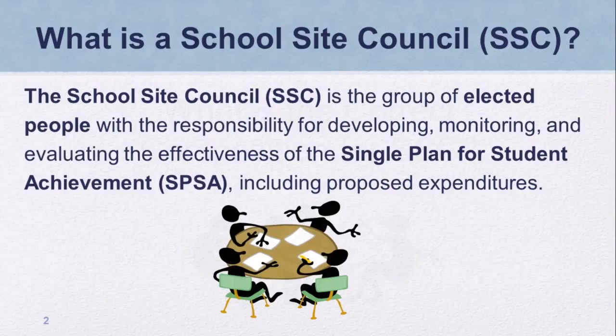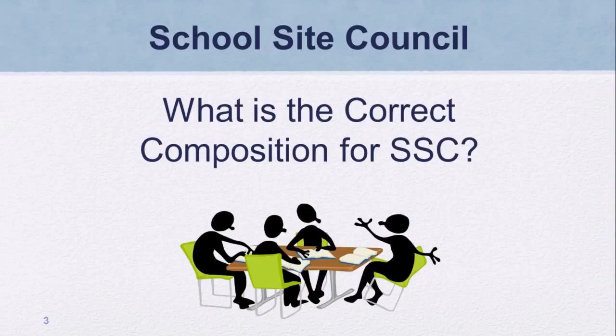The composition of the School Site Council is a frequent area of noncompliance during federal program monitoring. One common reason for noncompliance with SSC composition is the desire on the part of school leaders to ensure certain groups or individuals are included on the council. Even Education Code encourages a broad representation on the council, but the composition requirements are very clear and the process requires selection of members by their peers.